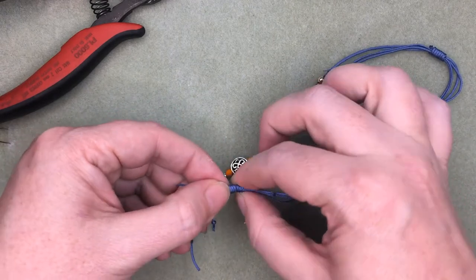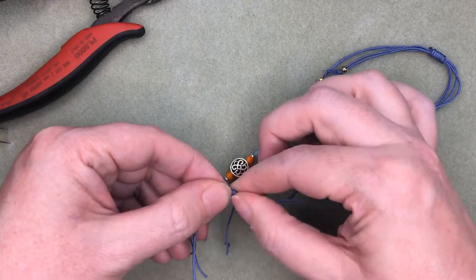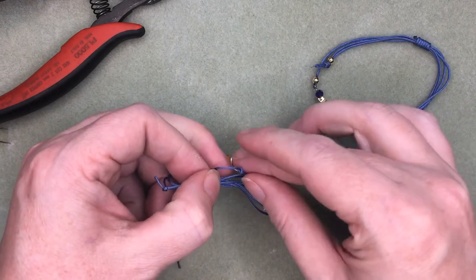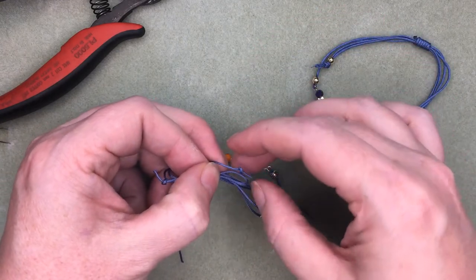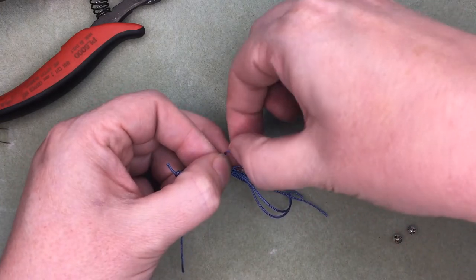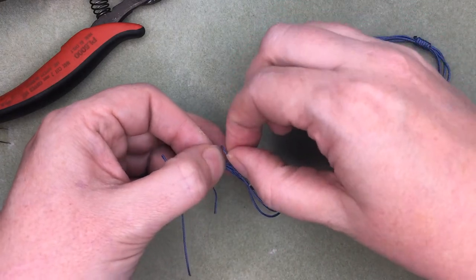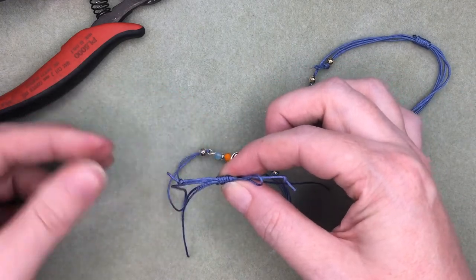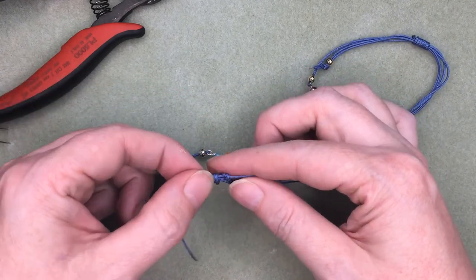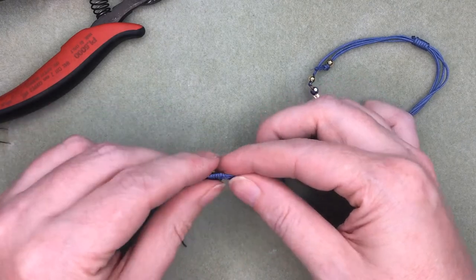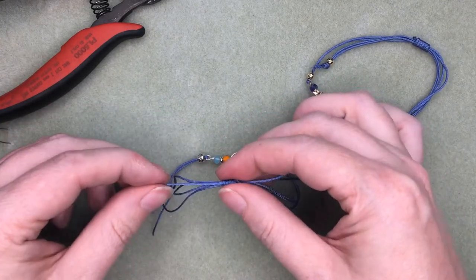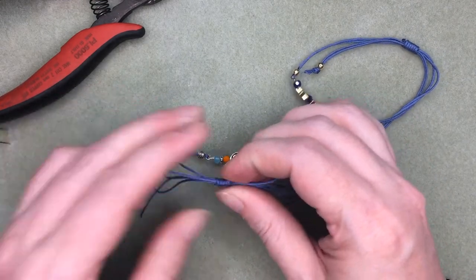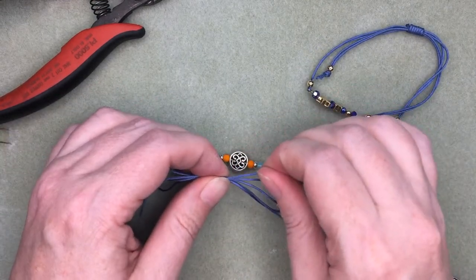So decide how many wraps you want. I didn't get mine as tight as I wanted them but they're there. I will just take the tail end and tuck it through my loop. So there, it's tucked through, and then I'm just gonna pull the other tail end to pull it in tight. So pull on both ends, get it good and tight.